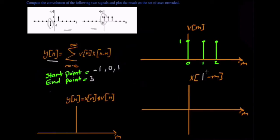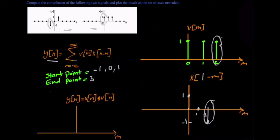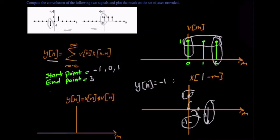The next point is one. For x of one minus m, the new points will be an amplitude of one at point zero, and amplitude of negative one at point two. We see if there is an overlap in both functions. Yes, we see an overlap at point two — we have an amplitude of one, and there we have an amplitude of negative one. We also see an overlap at point zero in v of m with an amplitude of one, and also at point zero an amplitude of negative one. So negative one plus one will be zero.